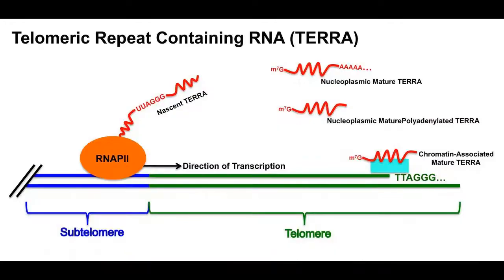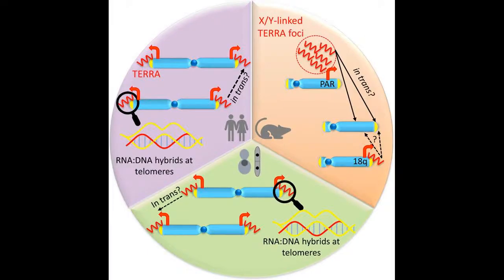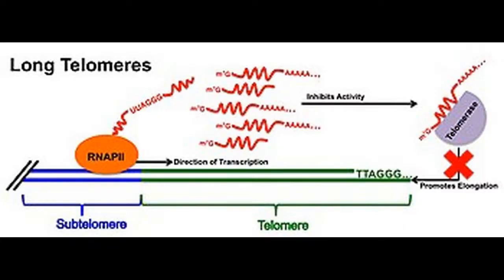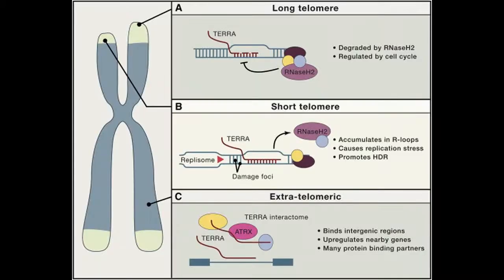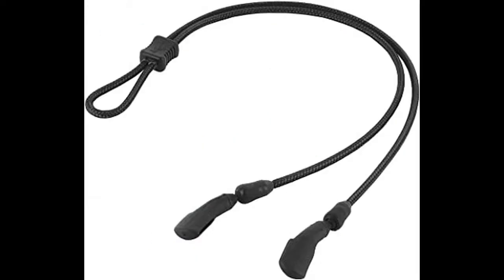In short telomeres with low TERRA expression, UPF1 and other SMG factors may work in concordance with DNA polymerase to remove TERRA from the telomere during replication and alleviate fork stalling to allow for progression of replicative machinery.